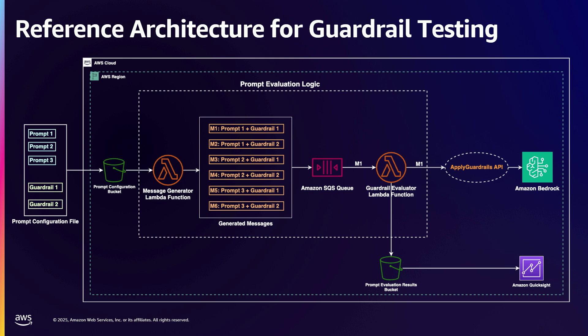When a message arrives at the SQS queue, a guardrail evaluator Lambda function picks it up and calls the Apply Guardrails API on Amazon Bedrock. The Apply Guardrails API takes the prompt, takes the guardrail, runs the prompt against the guardrail, and provides evaluation results. Those results are analyzed by the Lambda function and stored in S3. Once all messages are processed, they are stored in S3 and visualized through QuickSight.